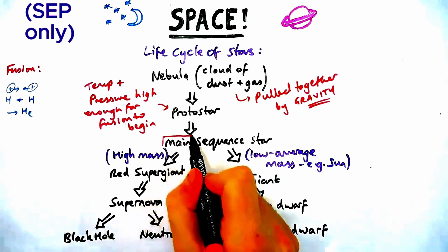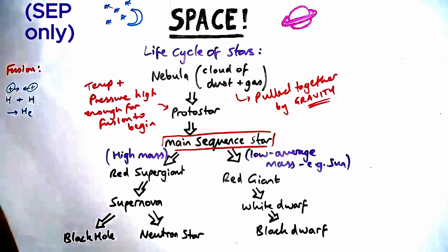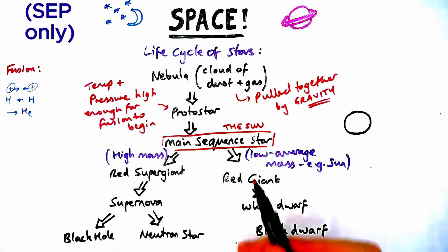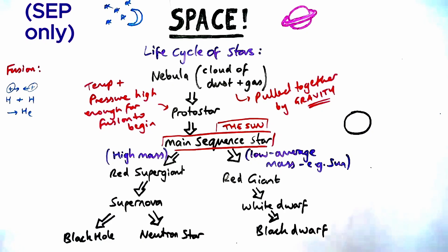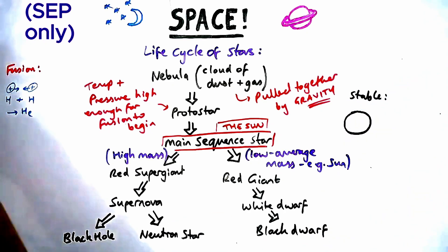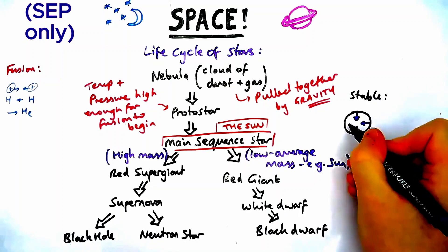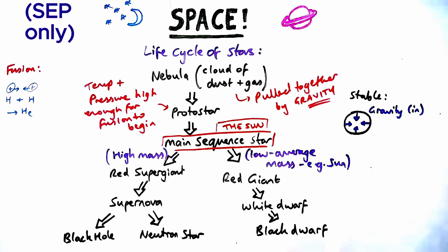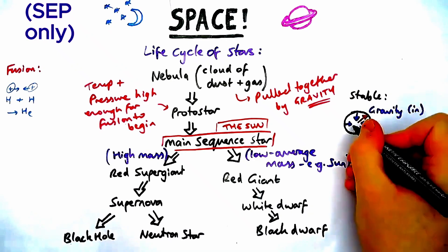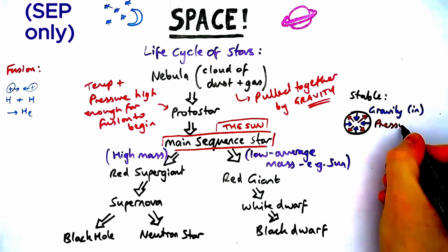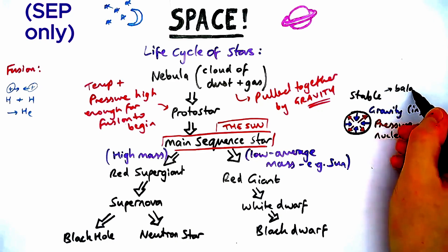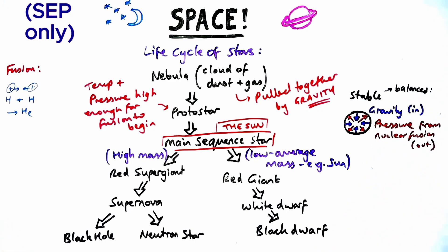Main sequence star - this comes up a lot in exams. This is the stage our sun is in currently. It's been there for about five billion years and will continue for another five billion years. It's a very stable phase. Stable meaning the forces acting on it are balanced or in equilibrium. The forces going inwards are gravity pulling everything inward. The forces outwards are caused by nuclear fusion releasing energy - pressure from nuclear fusion.